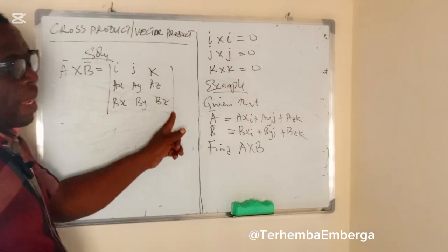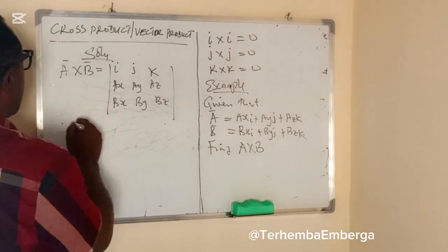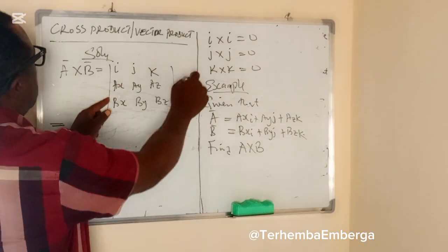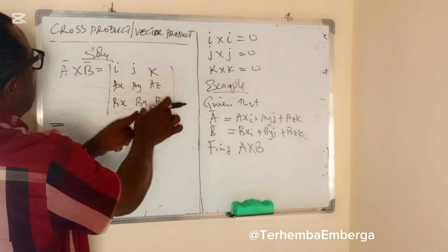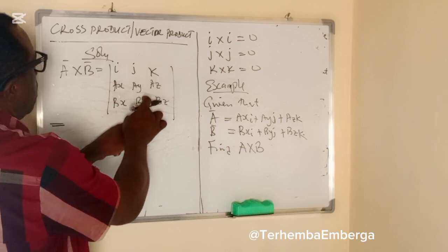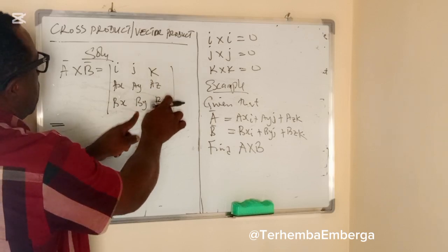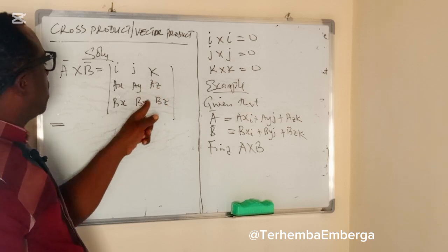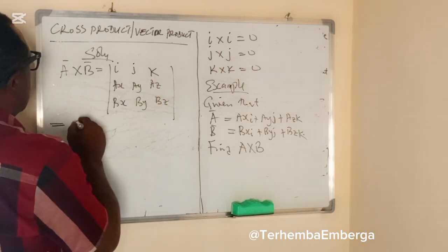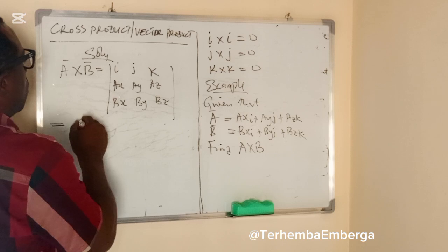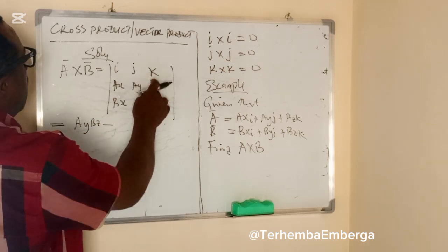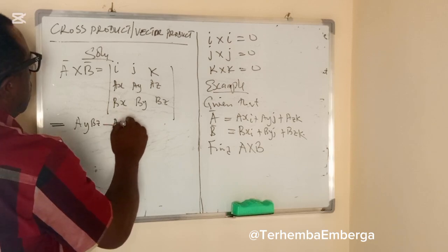I will multiply. This is important. For this and this we're left with AY AZ BY BZ, so we simply multiply AY by BZ minus AZ by BY, so that is equal to AY BZ minus AZ BY, and that is I.